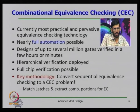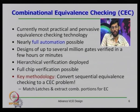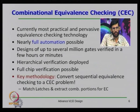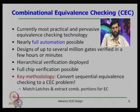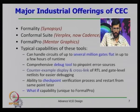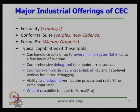A problem is that most circuits are sequential, and combinational equivalence checkers cover only a portion. For sequential equivalence checking, the design space explodes. One common approach is to convert the sequential equivalence checking problem into a combinational equivalence checking problem. Current industry tools include Formality from Synopsys, Conformal suite from Cadence, and Formal Probe from Mentor Graphics, all with enormous capability to handle several million gate-level netlists and comprehensive debug capability.